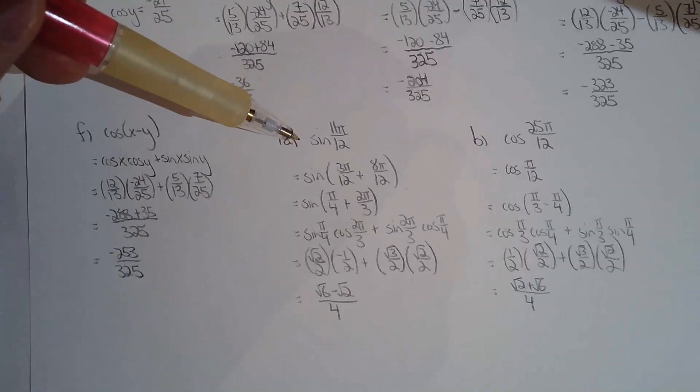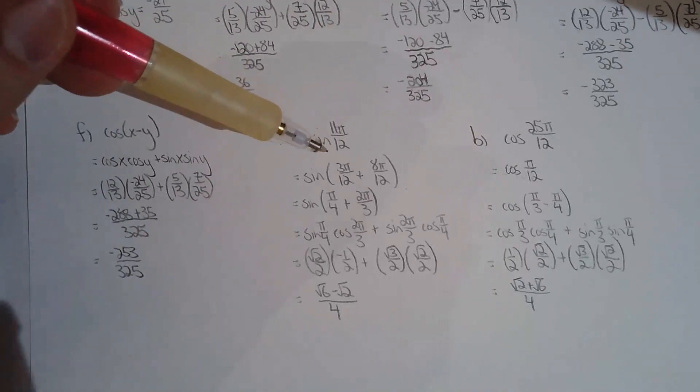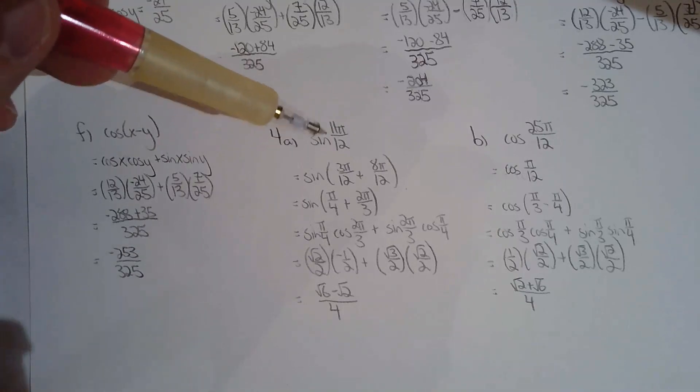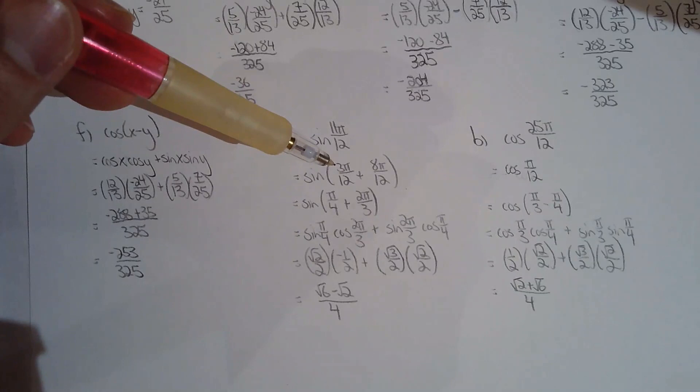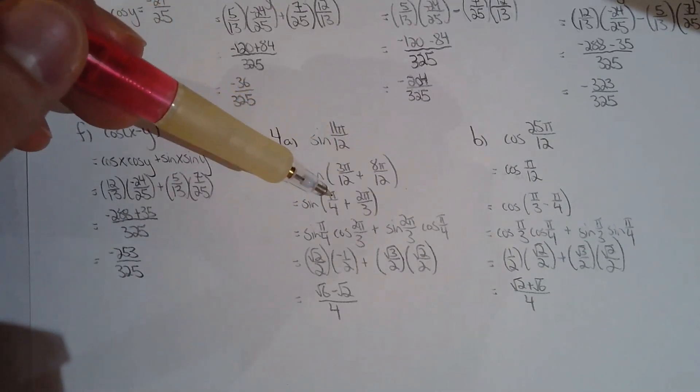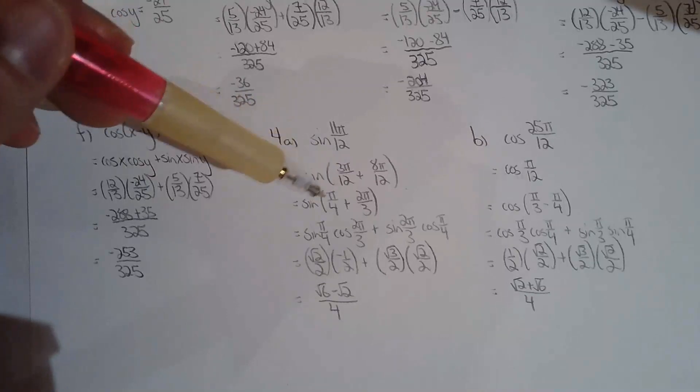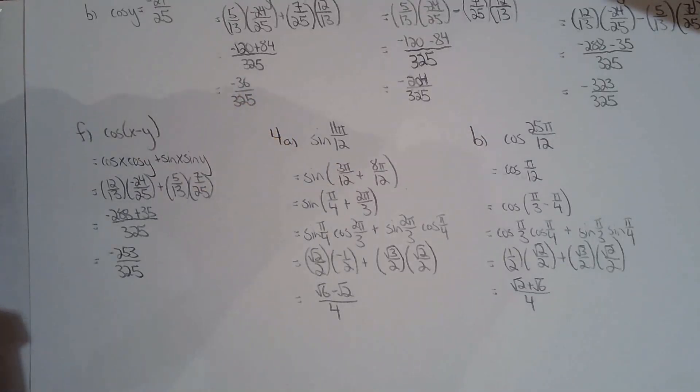Okay, for 4a, I'm breaking apart 11 pi over 12. There are infinite ways of breaking it apart, but I would argue that one of the easier ways to do it is breaking it apart to 3 pi over 12 plus 8 pi over 12. I break it down to special angles, and then I use addition formula for sine, and find out the ratios, and I'm done.